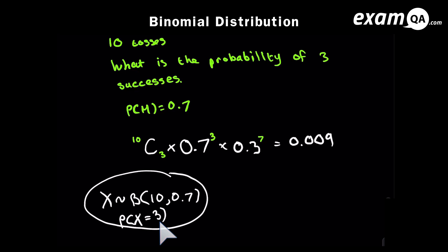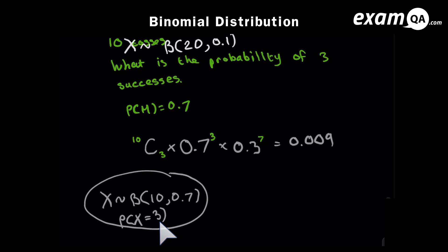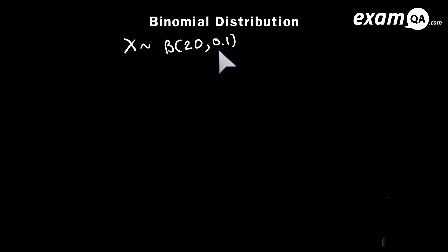In general, X is distributed binomially, N is the number of goes or trials, and P is the probability of success. This is telling us that X is distributed binomially with 20 trials and the probability of success is 0.1 — meaning, for example, 20 coin tosses. This is telling us to work out the probability of getting five successes in those 20 goes, with probability of success being 0.1.